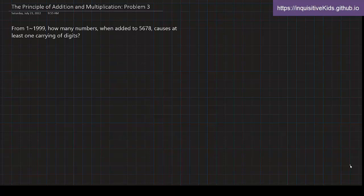Problem 3. From 1 to 1,999, how many numbers, when added to 5,678, causes at least one carrying of digits?